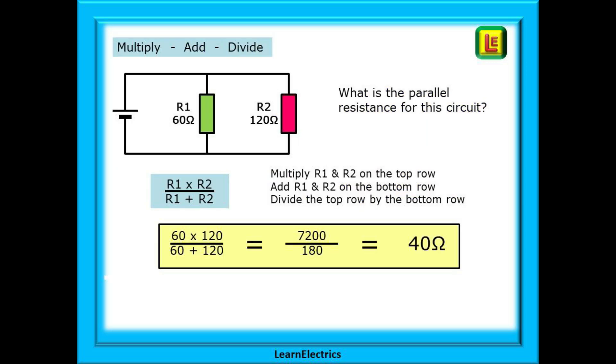Looking at the same circuit of 60 ohms and 120 ohms, we first multiply R1 and R2 on the top row. Then we add R1 and R2 on the bottom row. And to find our new value, we simply divide the top row by the bottom row. You can see the calculations shown here. Our answer is 40 ohms, as in the previous example. And this will work for any two resistors in parallel.